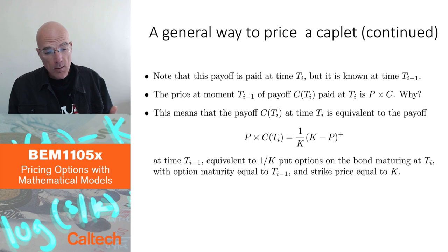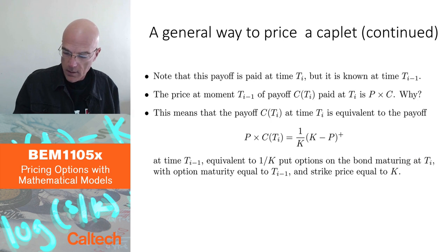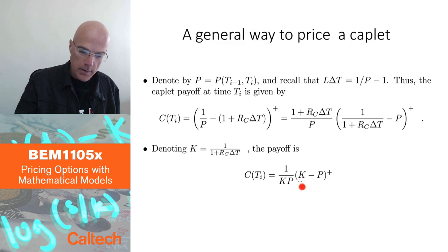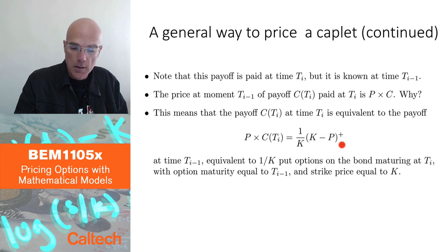Alright? Which means that the payoff of the caplet, which is the payoff at time Ti, is equivalent to the payoff of P times the caplet at time Ti minus 1. But, if you look at P times the caplet, then P and P will cancel. I have here 1 over P. So, P and P will cancel, and I will have 1 over K, K minus P. Now, it really is 1 over K put options, regular put options on the bond price.